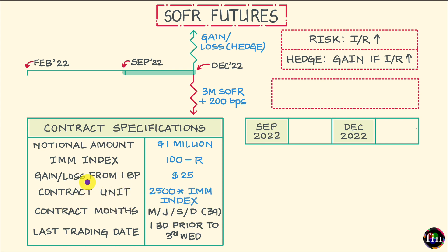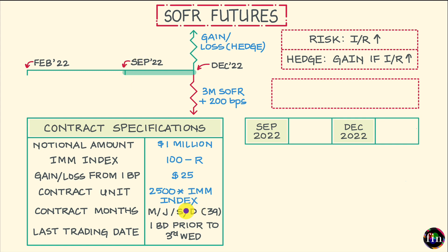I can interpret the contract unit to be the dollar value of one futures contract. When it comes to contract months, for three-month SOFR futures the cycle followed is March, June, September, and December. At any given point in time, you will have available as your choice the next 39 consecutive quarters.